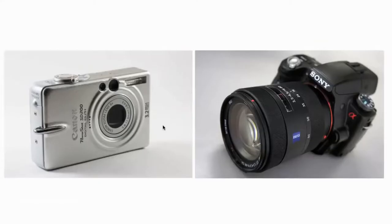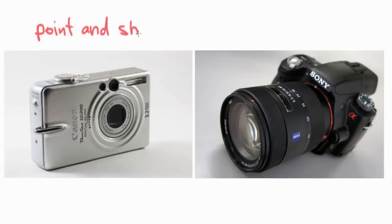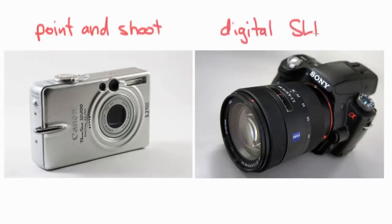Most people are going to have the option between basically two types of cameras. This right here is a point-and-shoot, and this is a digital SLR — single lens reflex. The point-and-shoot camera is a simplified version of the digital SLR.